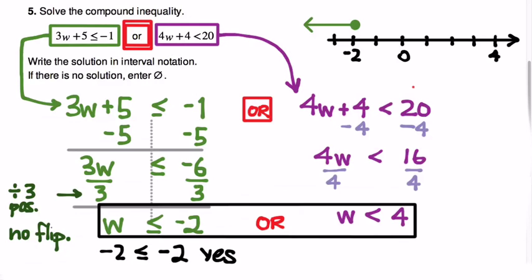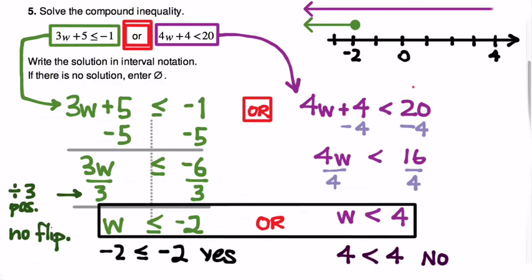So our work has given us two sets: a green set for w less than or equal to negative 2, and a purple set for w less than 4. Our job is to combine those two sets using the logical OR. OR is an inclusive quantifier — it takes everything belonging to either set and combines it all together. So OR acts like glue: we take everything which is either purple or green or possibly both.